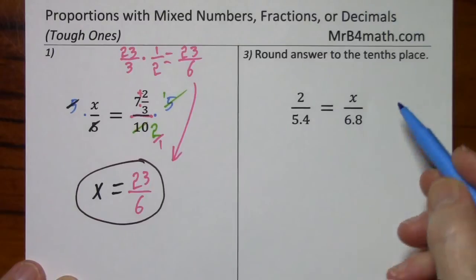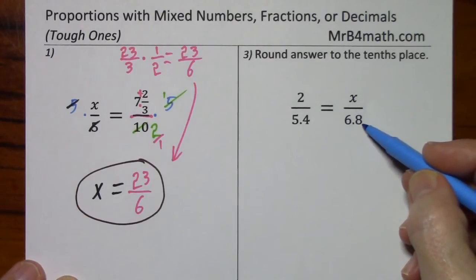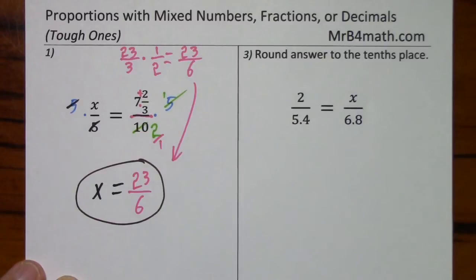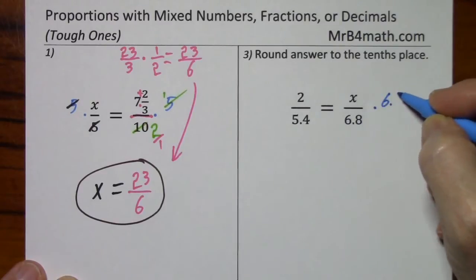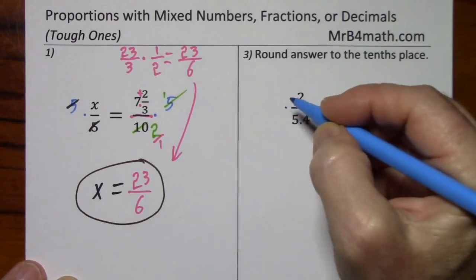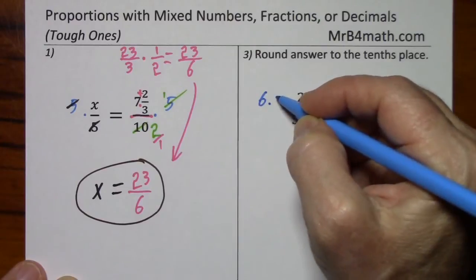Looking at the next equation, you have the variable in the numerator. All I need to do is multiply by 6.8, and I'll have x all by itself. On this side, I could clean this up some, but usually with a decimal I'll just leave things as they are and deal with them when I need to. So we'll multiply by 6.8, and multiply by 6.8.